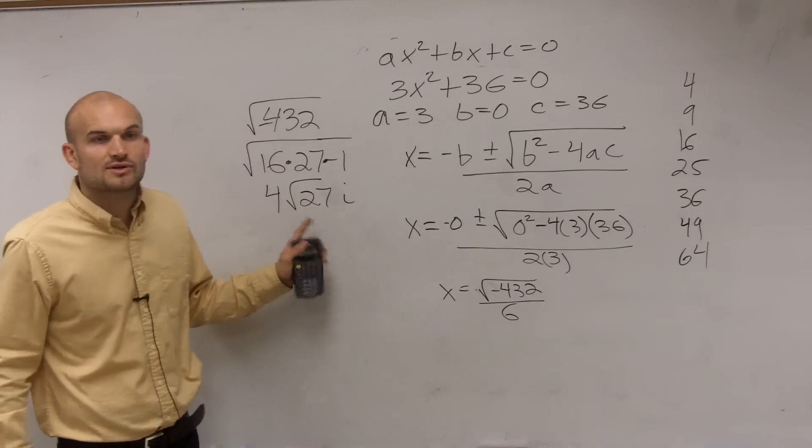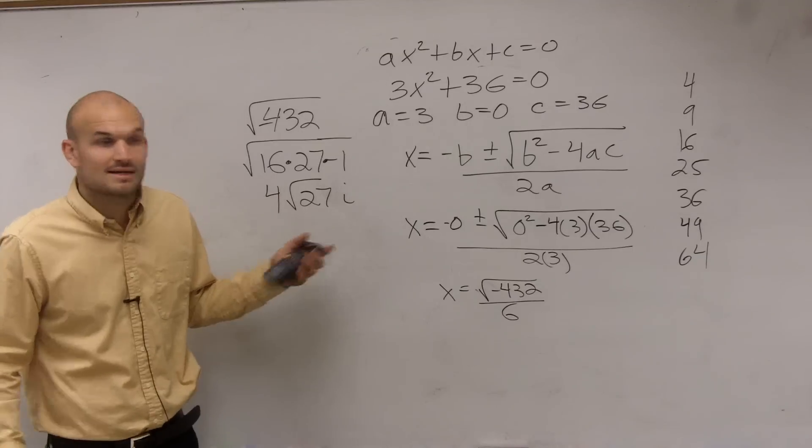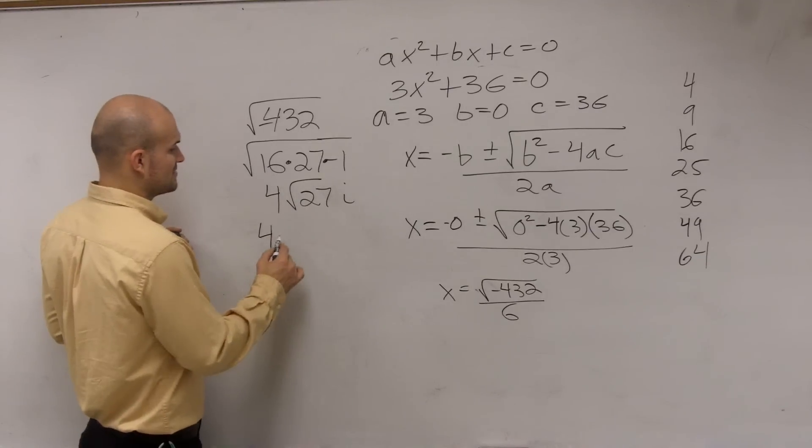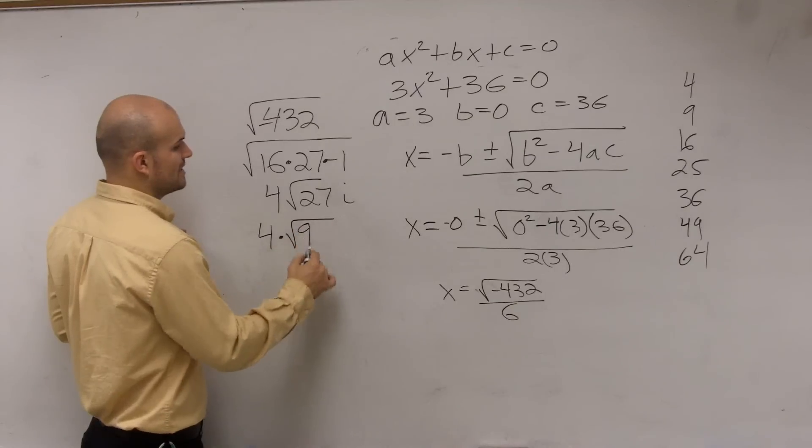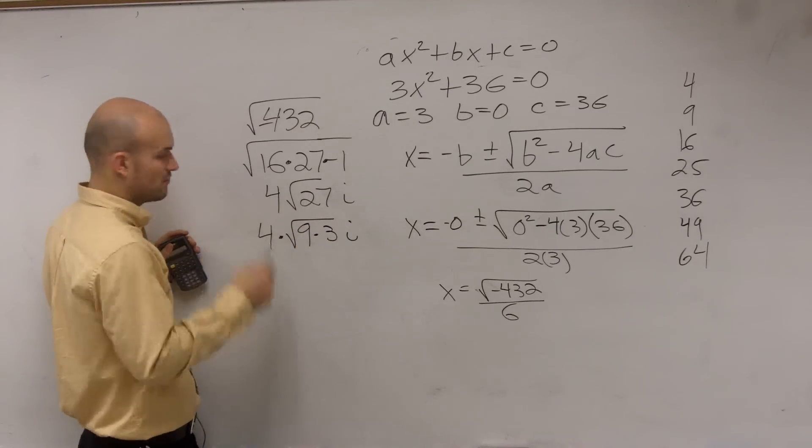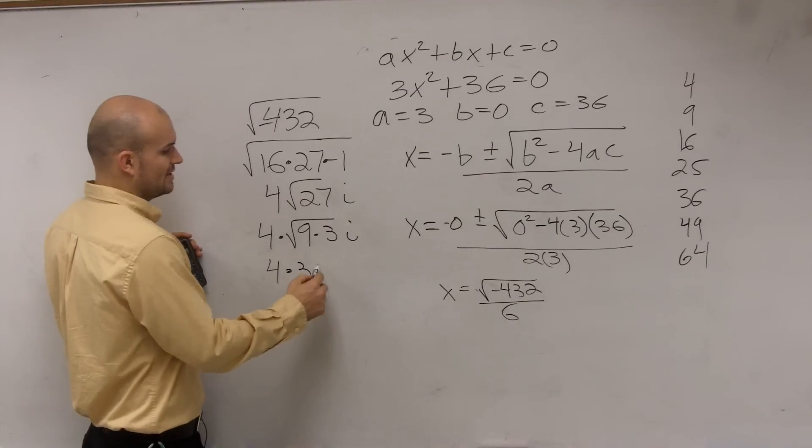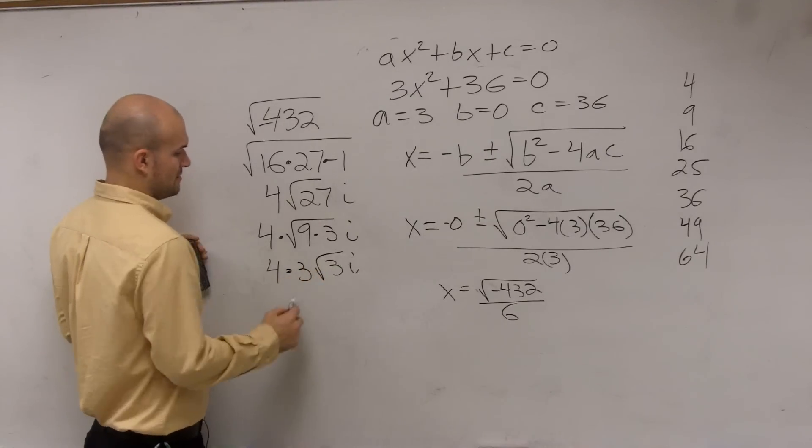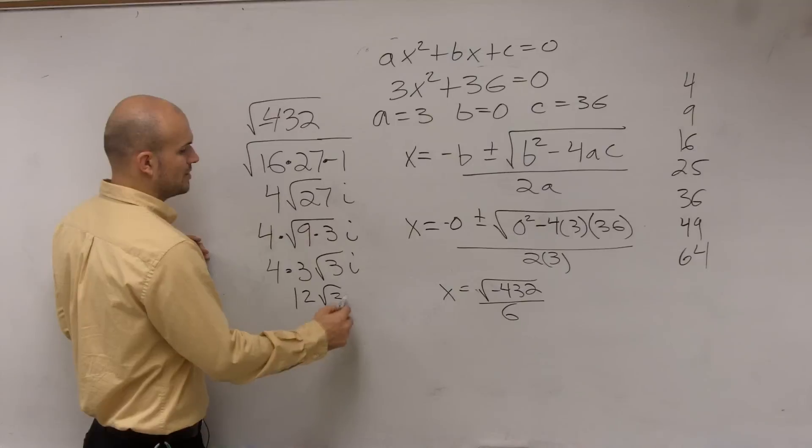Now, can we simplify the square root of 27 again? We could do 9 times 3, right? So I could rewrite this as 4 times the square root of 9 times 3 times i, which is 4 times 3 times square root of 3i. So we have 12 square root of 3i.